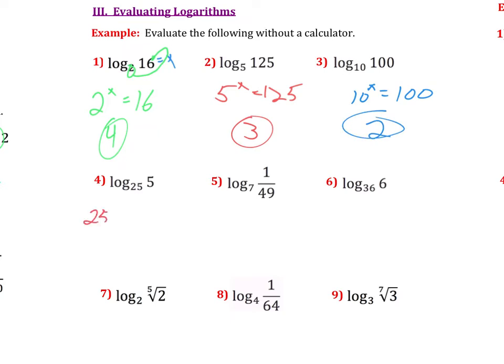Number 4, 25 to what power is 5? Well, I know the square root of 25 is 5. And if I wanted to write the square root as an exponent, well, the square root is the same thing as saying 25 to the 1 half power. So my solution here would be 1 half.